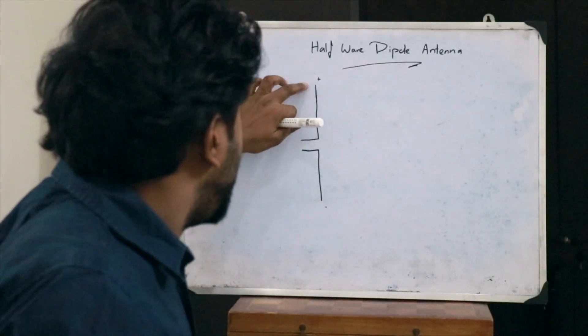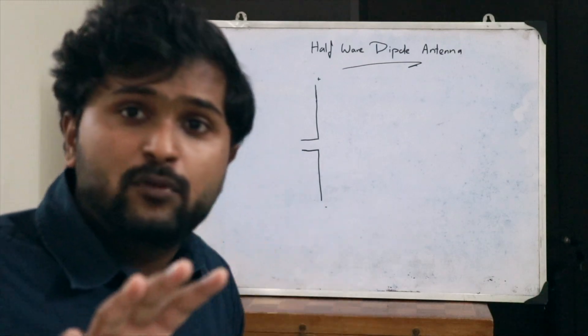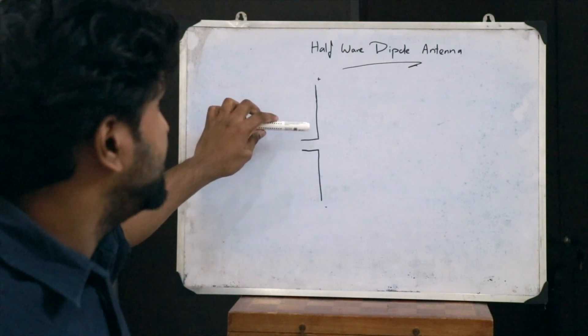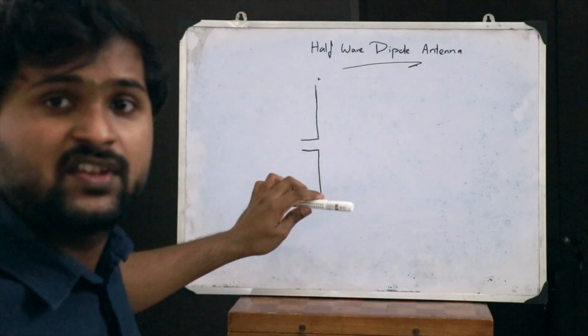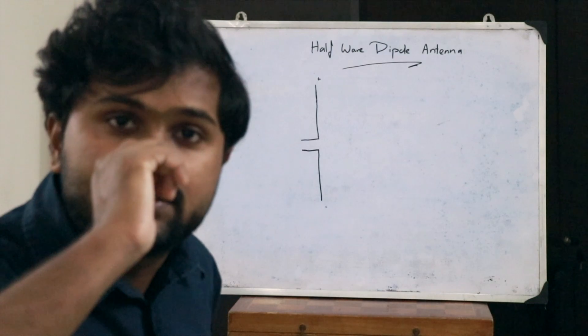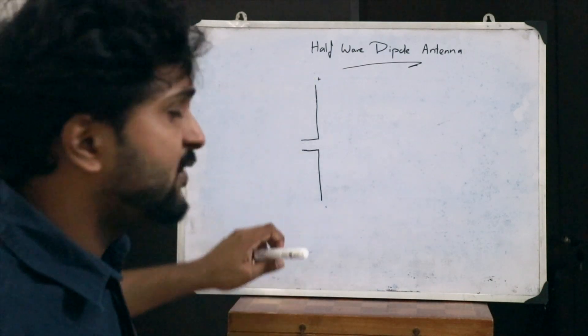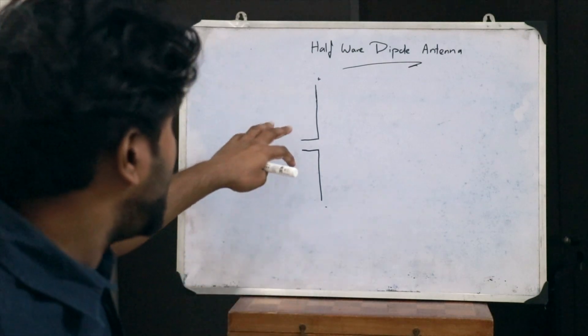Before we go into all these topics, we need to know what a half-wave dipole antenna is. Here I have drawn a diagram of a dipole antenna. A dipole antenna has two metallic wires which are identical to each other, forming two poles — a positive pole and a negative pole — and therefore it is called a dipole antenna.